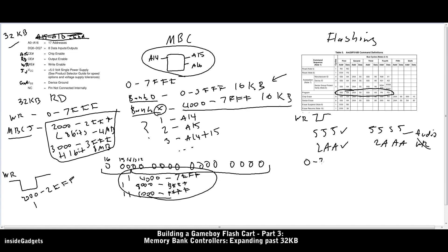For programming the flash chip, the first bank, bank 0, we don't have to make any changes to our programming method. Before we write to 4000 and above, we just tell the MBC to switch the bank every 16 kilobytes.